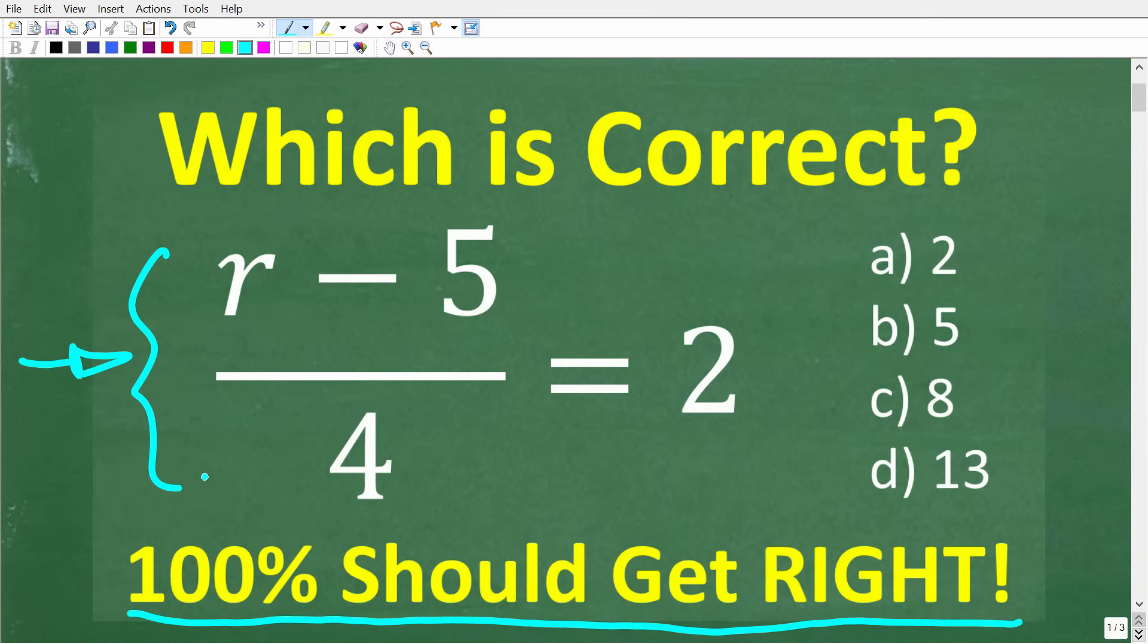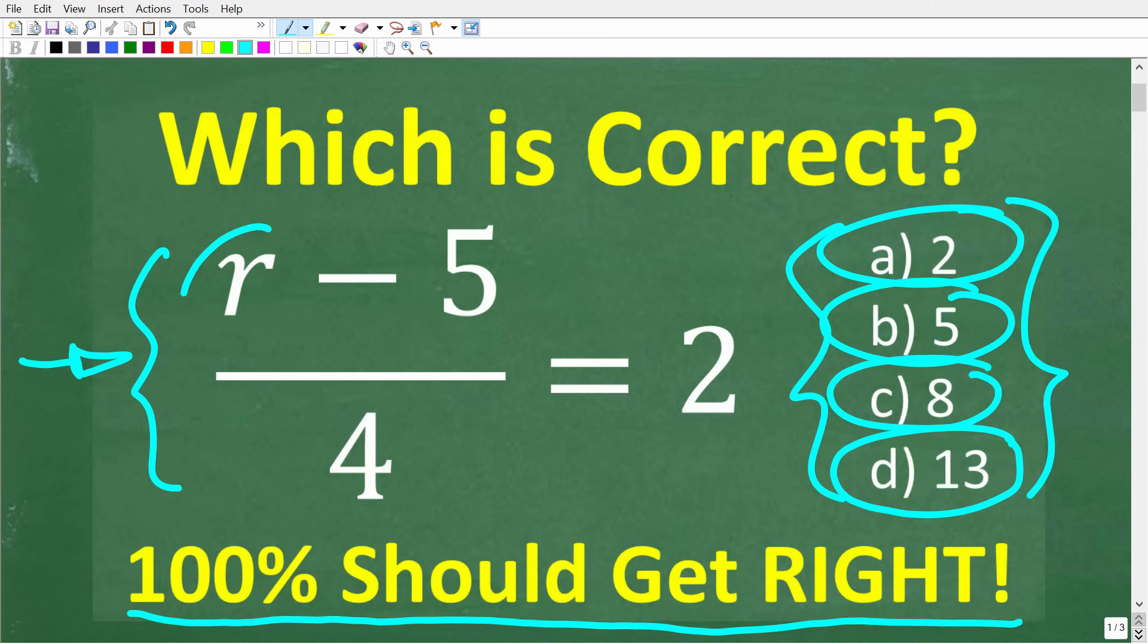But let's take a look at this problem. We have r minus 5 over 4 is equal to 2. Now we do have a multiple choice question. And let's take a look at our answers. So a is 2, b is 5, c is 8, and d is 13. These are the possible solutions for this variable r in this equation.